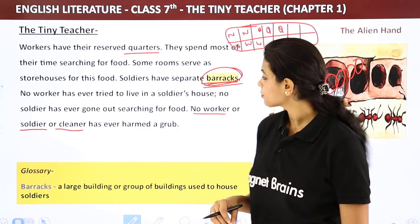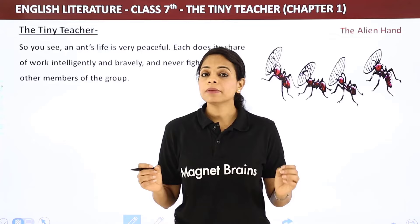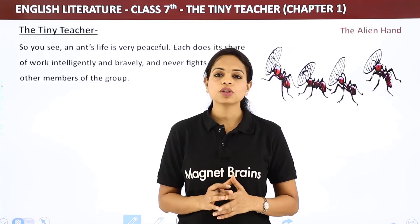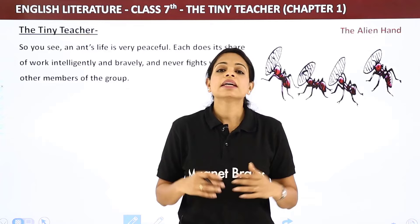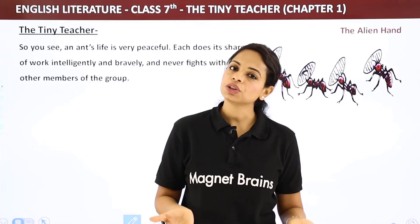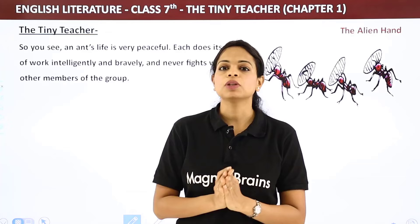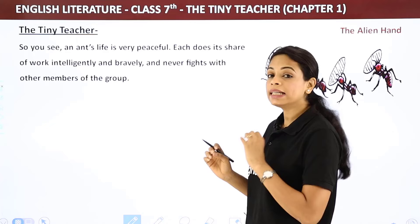An ant's life is very peaceful — peaceful meaning there is no fighting or chaos. In our offices, there is always confusion about who should do what job. But with ants, work is properly defined. Each does its share of work intelligently and bravely and never fights with other members of the group. When all responsibilities are designed, why would anyone fight? So they live a very peaceful life.